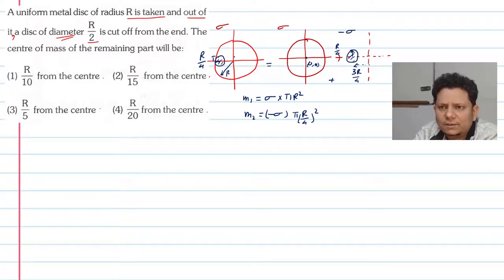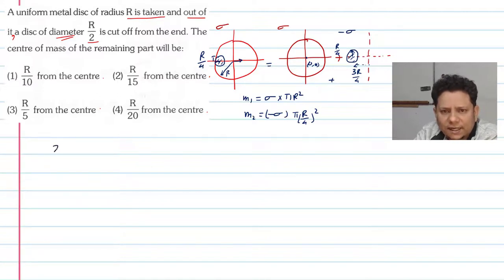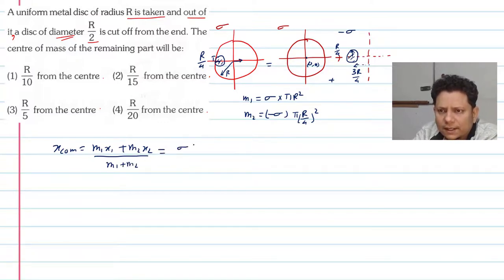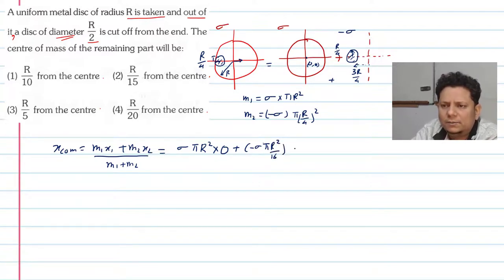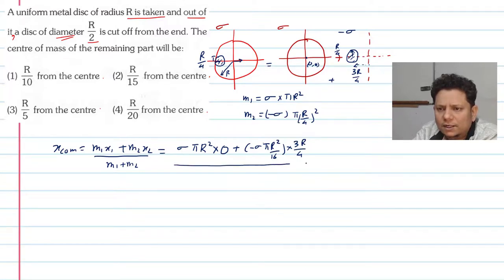Due to symmetry, the y-component of the center of mass is zero. We write x_cm equals (m1*x1 + m2*x2) divided by (m1 + m2). Substituting: numerator is sigma pi R squared times 0 plus minus sigma pi R squared over 16 times 3R/4, and the denominator is m1 plus m2.